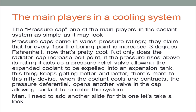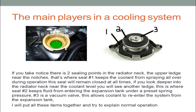There are two sealing points in the radiator neck. The upper ledge near the notches is where seal number one keeps the coolant from spraying during operation — this seal remains closed at all times. Deeper in the radiator neck near the coolant level is another ledge where seal number two keeps fluid from entering the expansion tank under a preset spring pressure. The metal device — number three on the radiator cap — is a vacuum valve, which allows coolant to re-enter the system from the expansion tank.